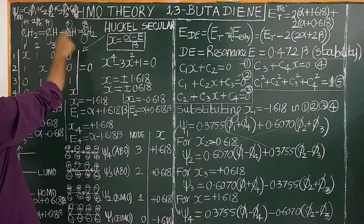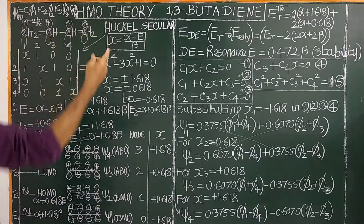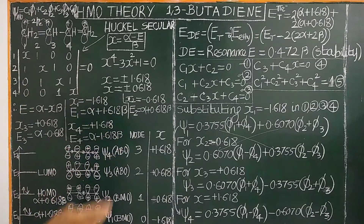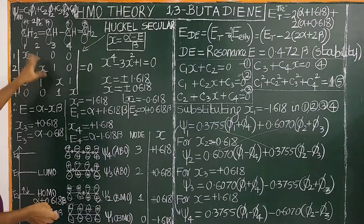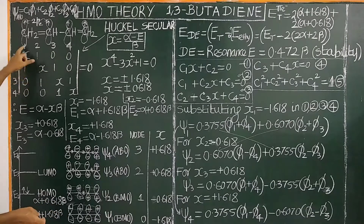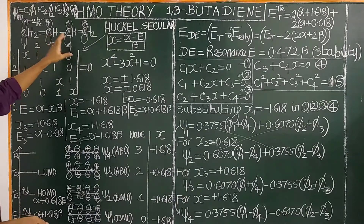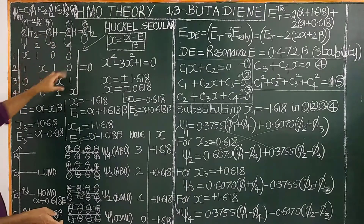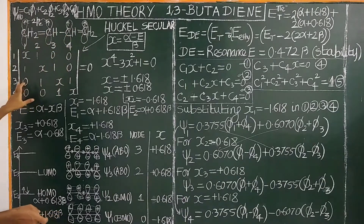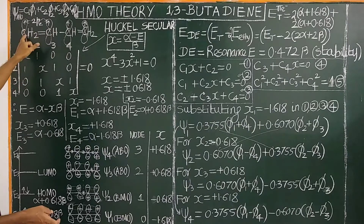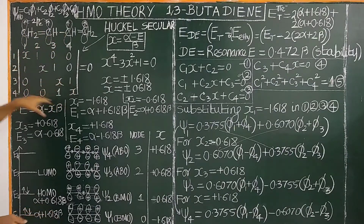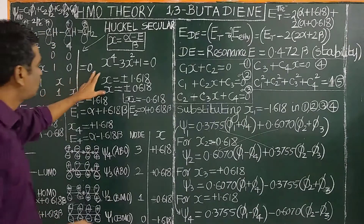Similarly, 1 and 4 are not neighbors, so element (1,4) = 0. Element (2,1) is adjacent, so it equals 1. Element (2,3) is adjacent, so it equals 1. Elements (2,4) and (3,1) are not adjacent, so they equal 0. The full secular determinant matrix is constructed with these rules, with all non-adjacent off-diagonal elements equal to 0.